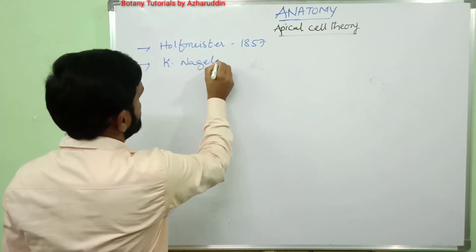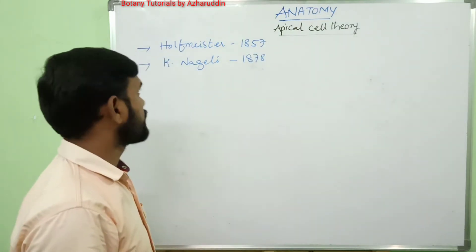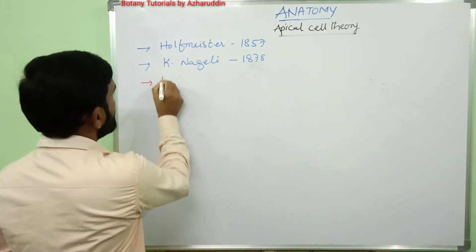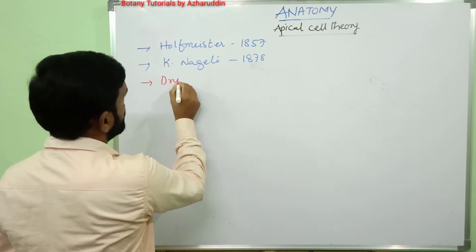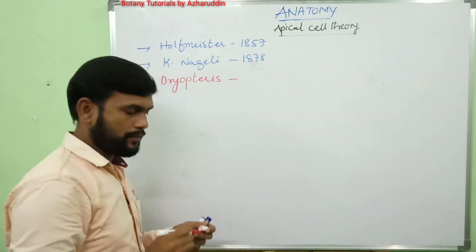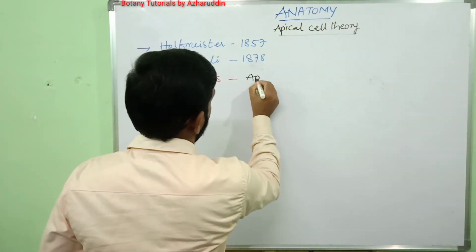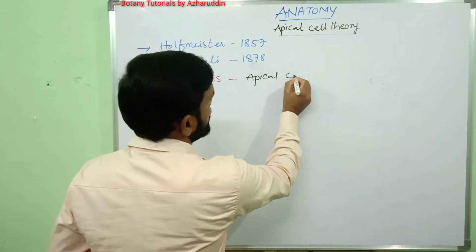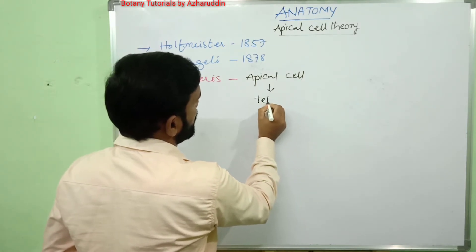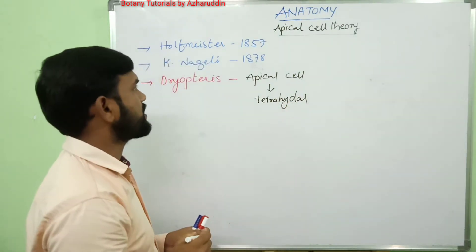According to this theory, in Dryopteris — a pteridophytic plant — the root apex contains an apical cell. This apical cell is generally tetrahedral in shape.